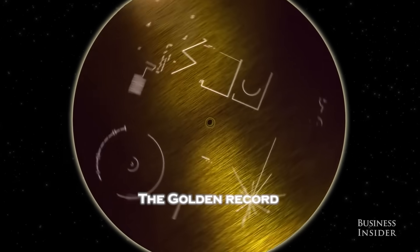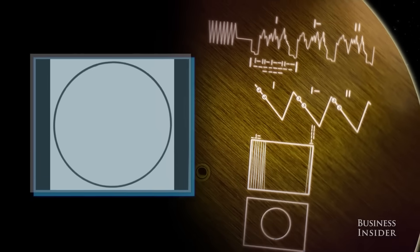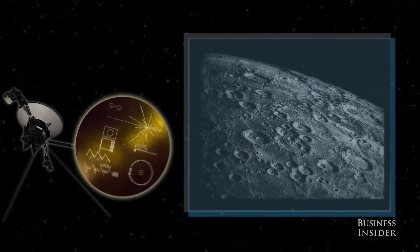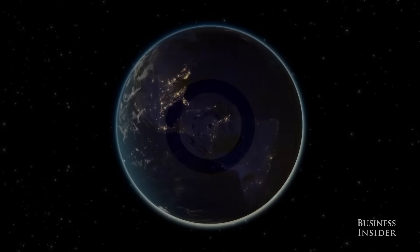Voyager 1 famously carries the Golden Record, a phonograph containing music, sounds, images, and scientific data from Earth, intended to communicate our civilization to any potential discoverers.